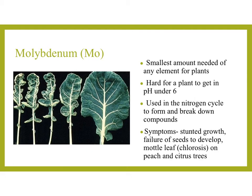Molybdenum — symbol Mo — is needed in the smallest amount of any element for plants, and it's very hard for a plant to obtain at a pH under 6. It's used in the nitrogen cycle, helping to form and break down compounds. The symptoms include stunted growth, failure of seeds to develop, mottled leaves, or chlorosis — that yellowing and curling — and we see it often on peach and citrus trees.